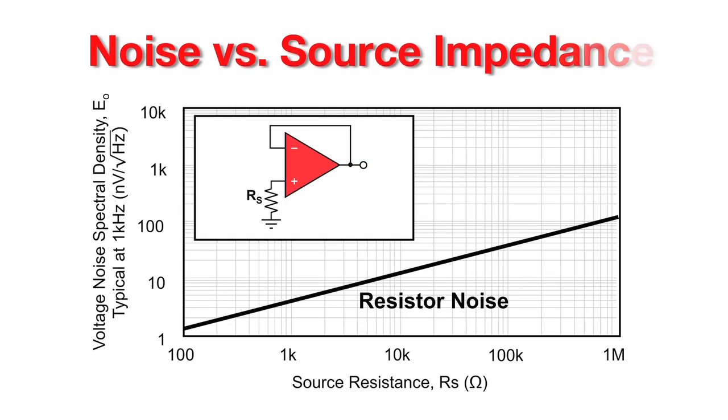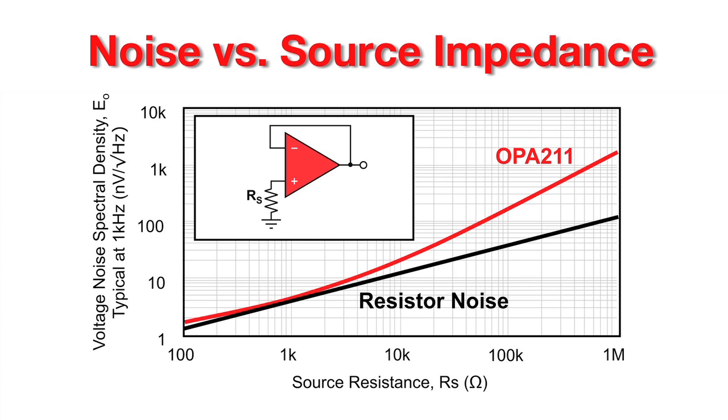Lower input bias current does mean lower current noise, but we need to keep in mind that the current noise is a function of the source resistance. Graphing the total noise of these parts versus the source resistance, you can see that the OPA211 has lower overall noise at lower source impedance while the OPA827 has lower noise at high source resistance. So the selection of bipolar versus JFET will depend on the source resistance: if the source resistance is high, use a JFET; if the source resistance is low, use a bipolar amp.